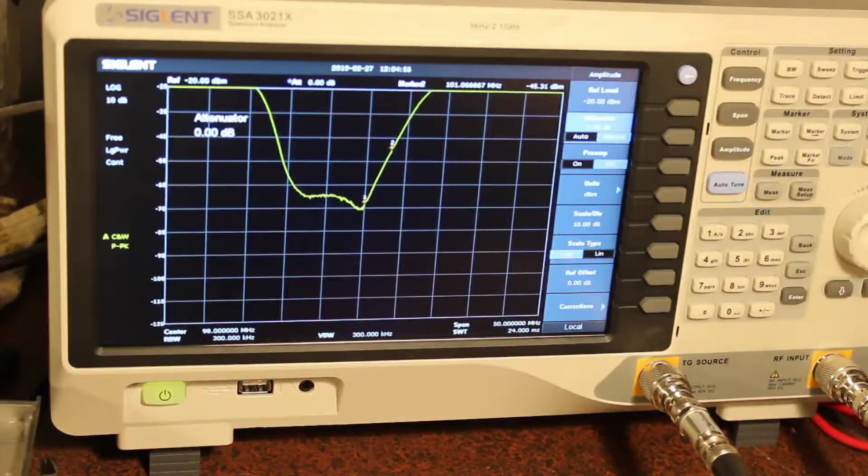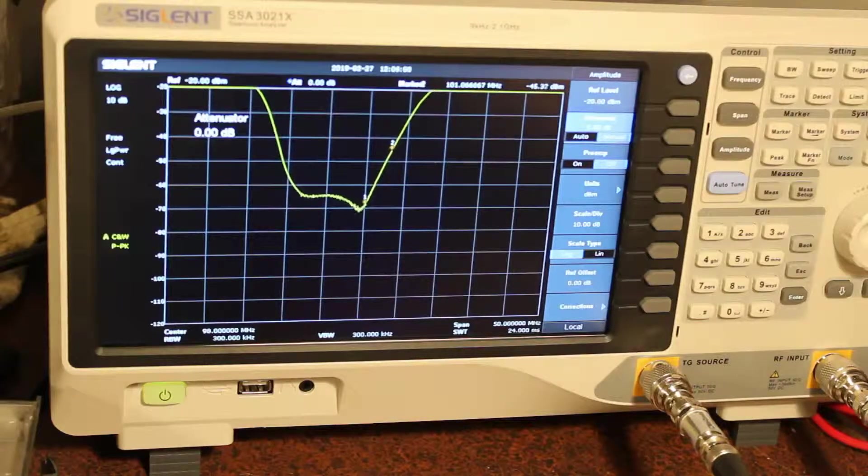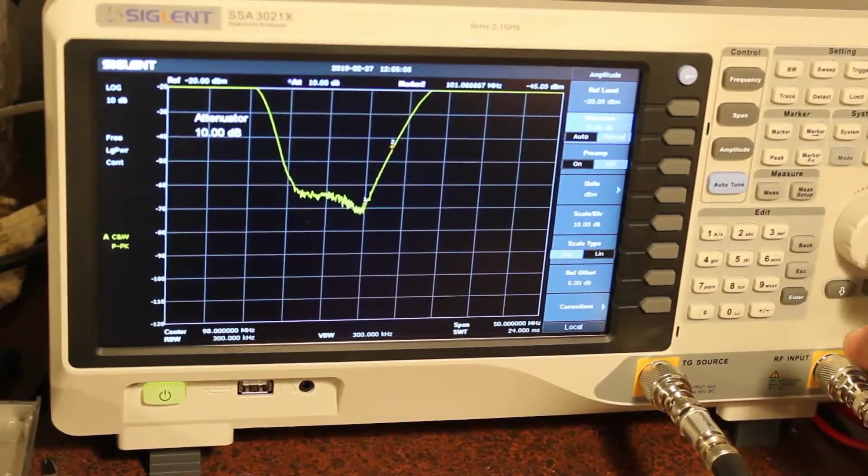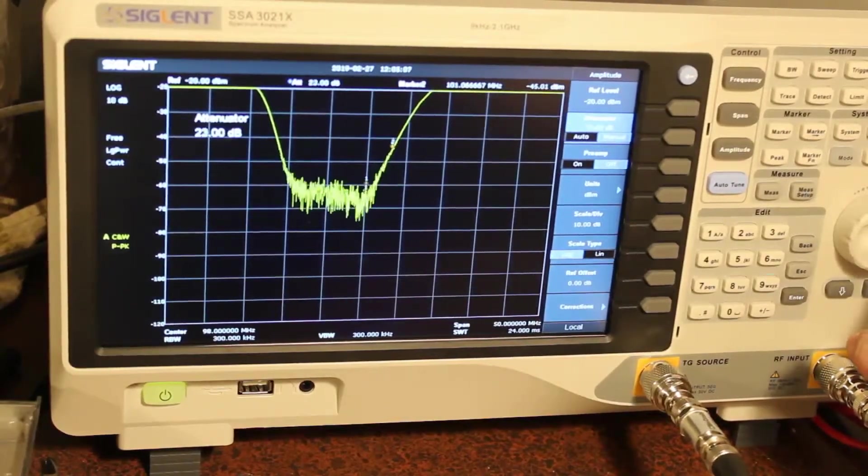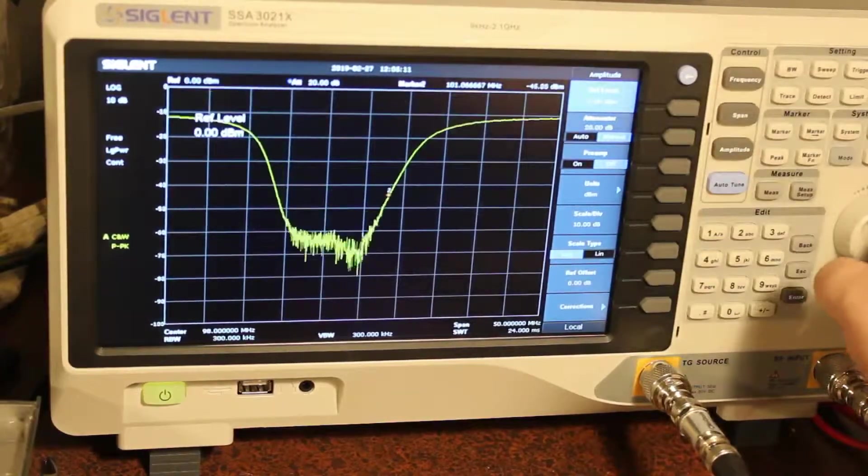So of course, our reference level changes a bunch, so bear with me. But you can see that the shape at the bottom doesn't really have much of a difference. So let's throw 10 dB back on there. Actually, you know what? Let's go full 20. And that way I can get my reference level back. There we go.